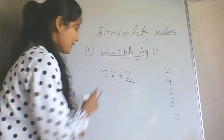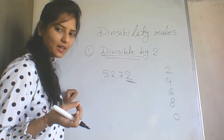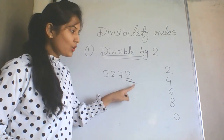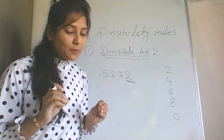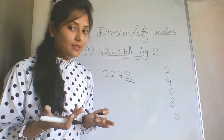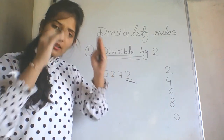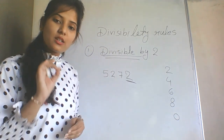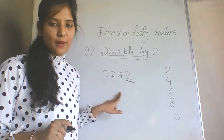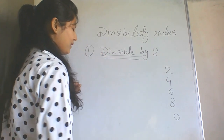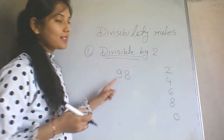For example, 5272 — the last digit is 2, which is in our list, so 5272 is divisible by 2. Similarly, 98 — in the ones place there is 8 — so 98 is also divisible by 2. Divisible means when we divide this number by 2, the remainder will be zero, meaning it divides properly.